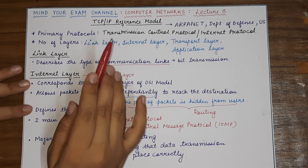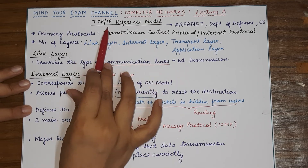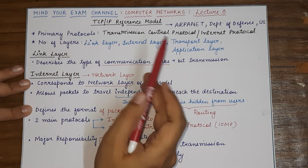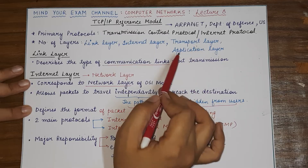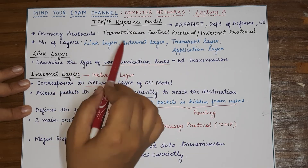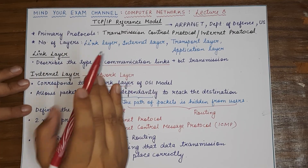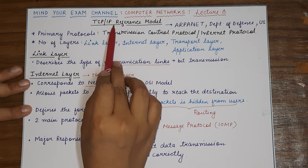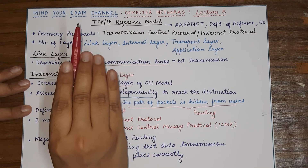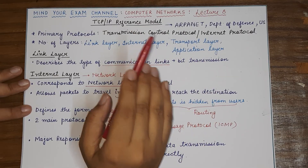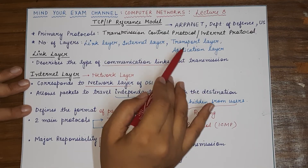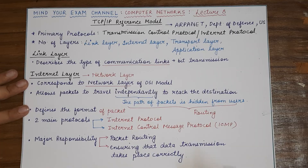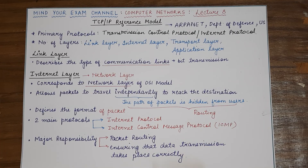So this was the TCP/IP reference model, which mainly consists of four layers. If books say five layers, the first two are the physical layer and data link layer, while the last three are the internet layer, transport layer, and application layer. To summarize: the link layer covers responsibilities of both physical and data link layers from OSI; the internet layer corresponds to the network layer of OSI; the transport layer covers the transport, session, and presentation layers of OSI; and the application layer corresponds to the application layer of OSI. That's all for today's lecture — thank you for watching!